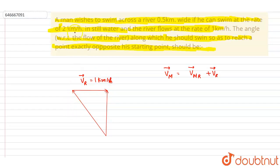And the man's velocity in still water, that is velocity of the man with respect to the river, is 2 kilometer per hour. So by triangle rule of vector addition, this will be the velocity of